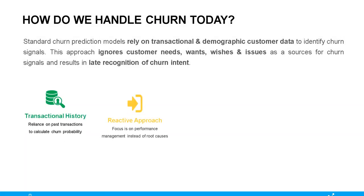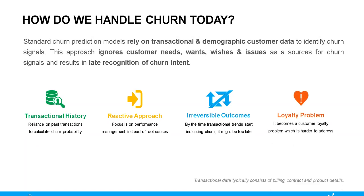Before we talk about solving this problem 2x faster, let's inspect how typical churn reduction implementations work. About 80-90% of churn reduction implementations are done by marketing teams. They have a lot of sales and marketing data — where the customer lives, what they purchased, how long they've been a customer, age groups, demographics — all of this goes into so-called predictive models to predict likelihood of customer churning.